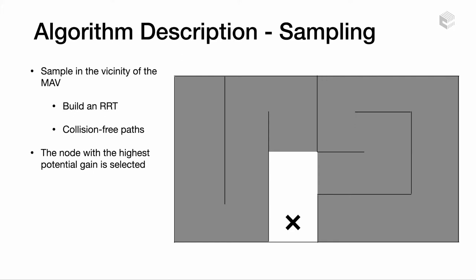The planner consists of an iterative step. At every iteration, it builds an RRT for sampling points and collision-free paths between them. The node with the highest potential gain is selected as the next-best view. The RRT is limited to sample points in a sphere of radius R rooted at the current position of the drone.